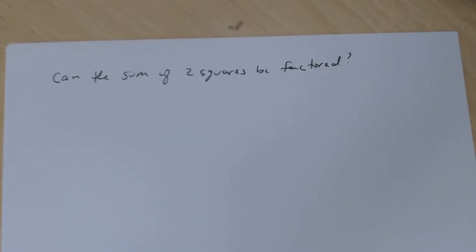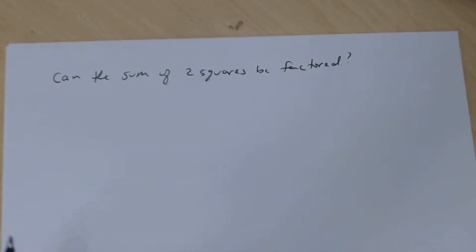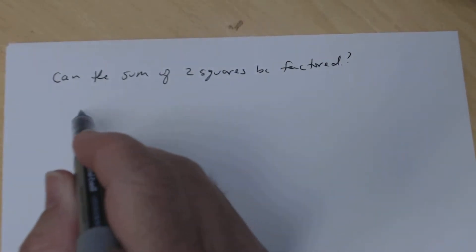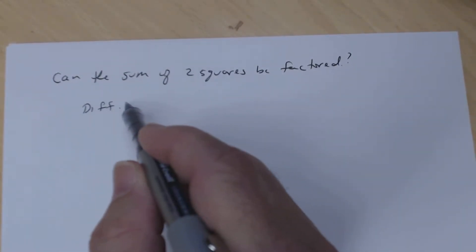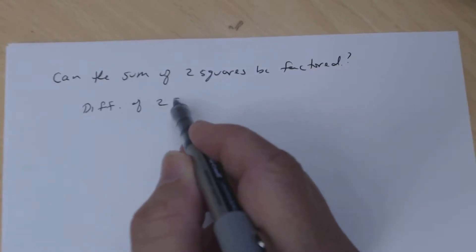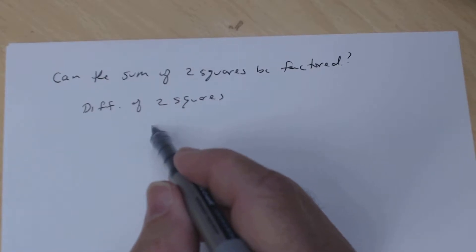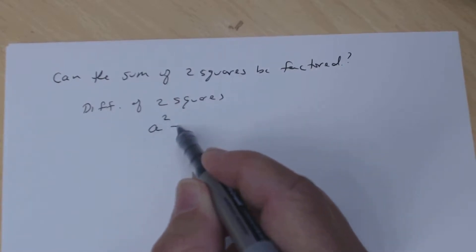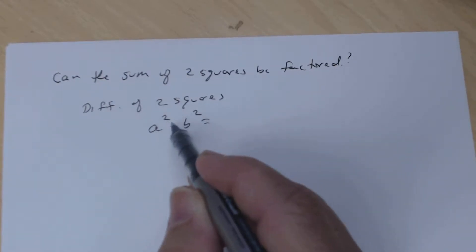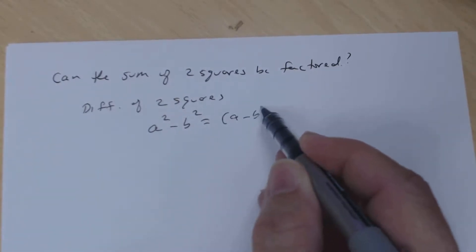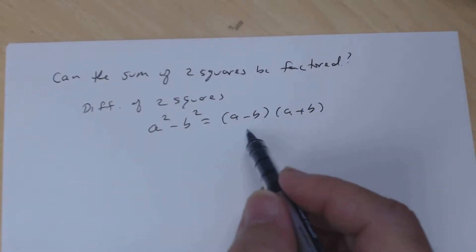In this video we want to determine: can we factor the sum of two squares? We know we can factor the difference of two squares. The difference of two squares looks like a² - b², and we can factor it as (a - b)(a + b).